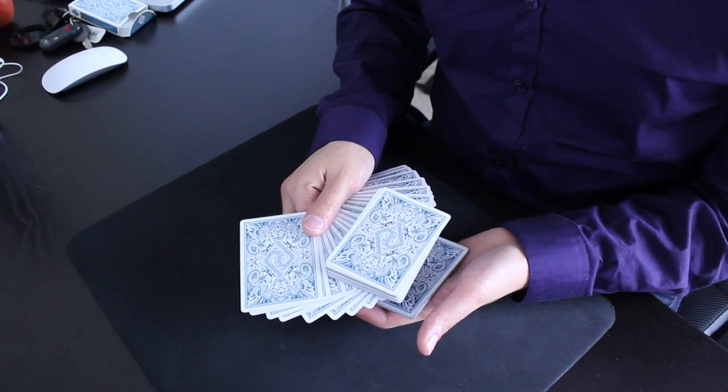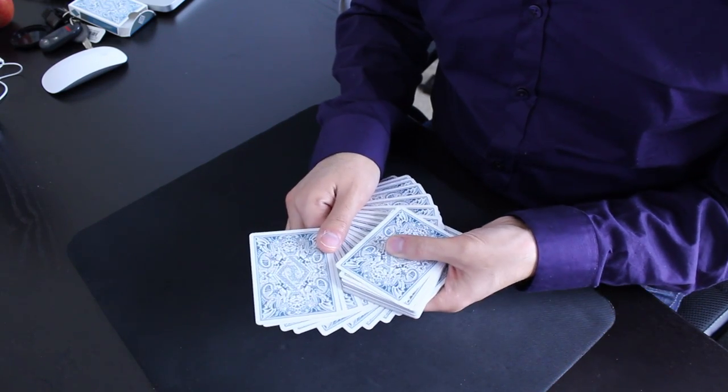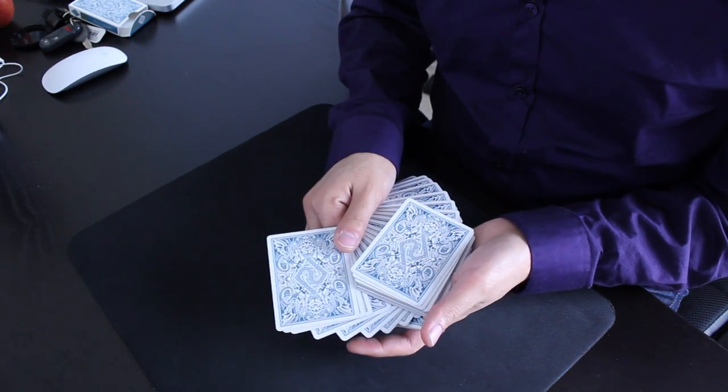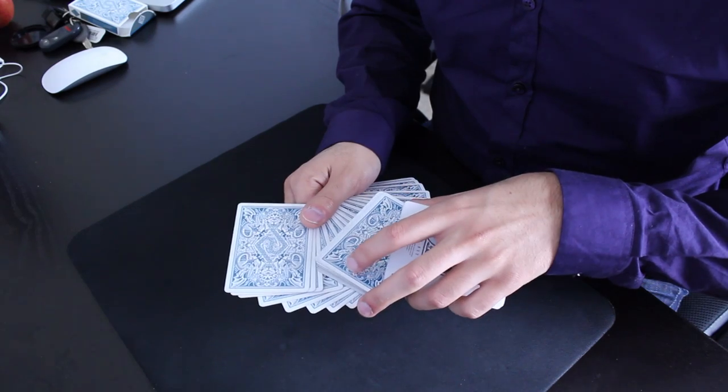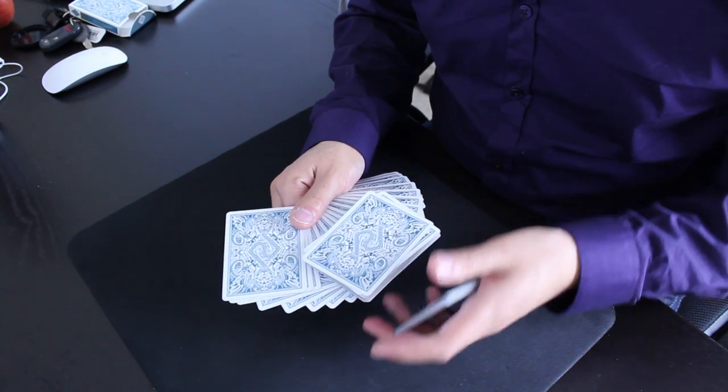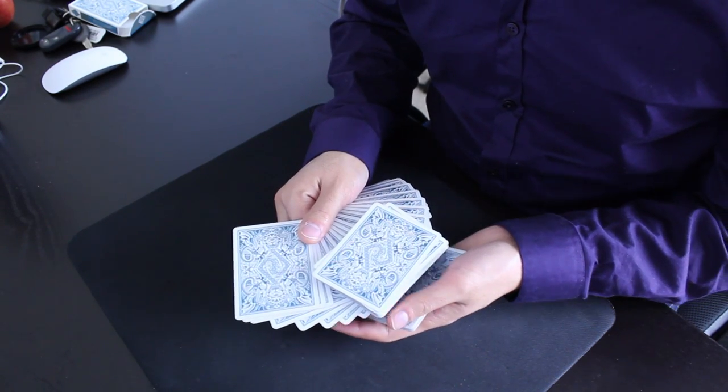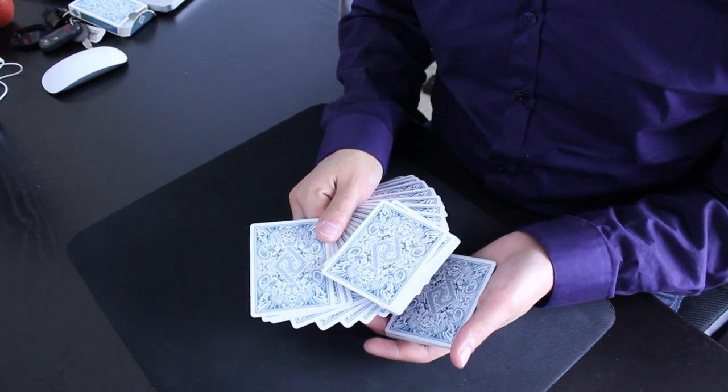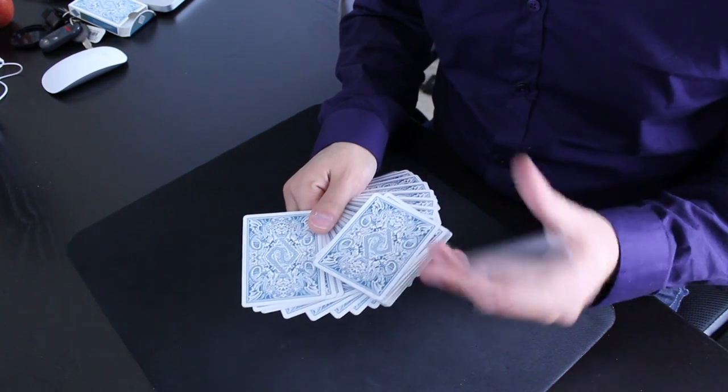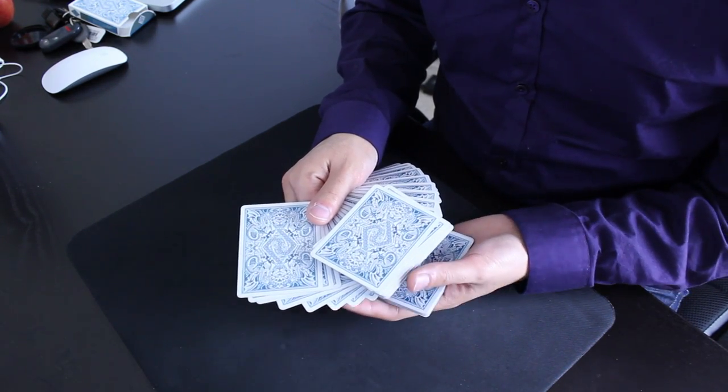And from here, this is the hardest part of the move, it's the flipping of the packet. And it is the hardest part, but it's not as hard as you would think. So you just have to do it with confidence and these cards will stick together and they'll flip the way that you want them to.